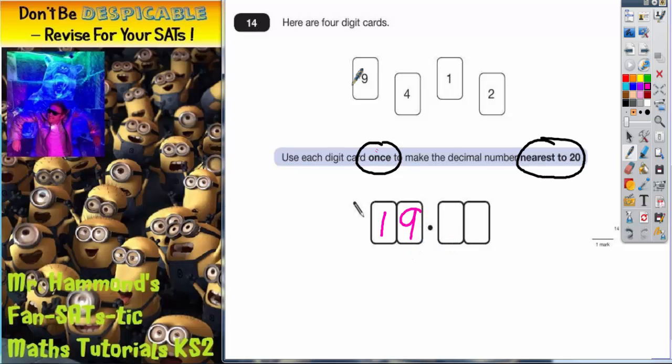So all we've got to do then is decide where do we put the 4 and the 2. We've already used the 1 and the 9, so we can cross those out. There's the 4 and the 2, so there's only two options.